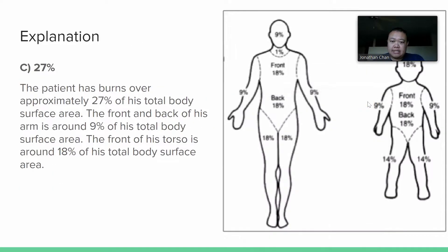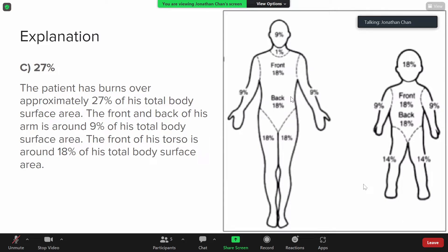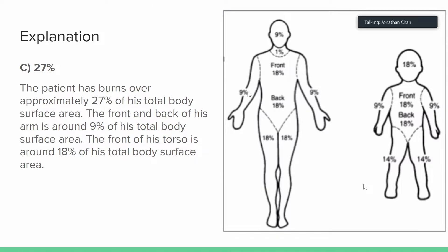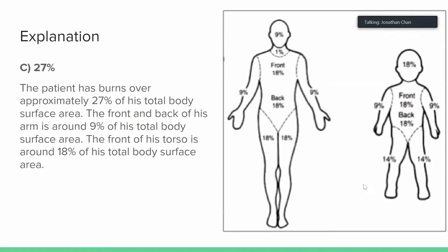The way we calculate this is using the Rule of Nines. Each part of the body has a different percentage. The front of the chest and abdomen is 18% of the body. Each arm is 9%, the head is 9%, the legs are 18% each, the front of the body is 18%, and the back of the body is 18%. So for this patient, the front of the body is 18% and the arm is 9%. We add these together to get 27%.